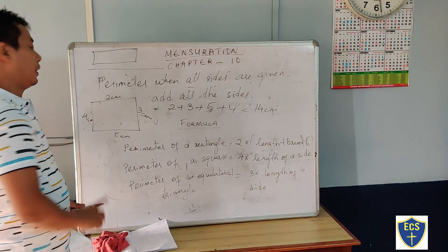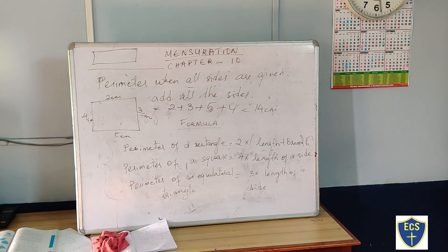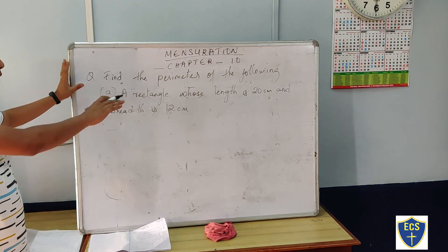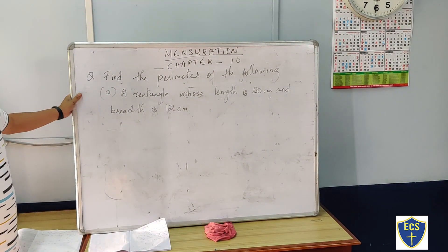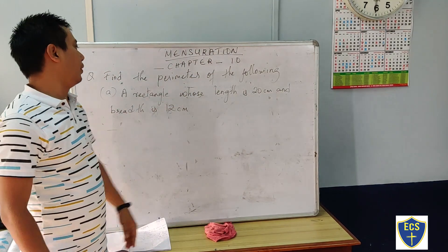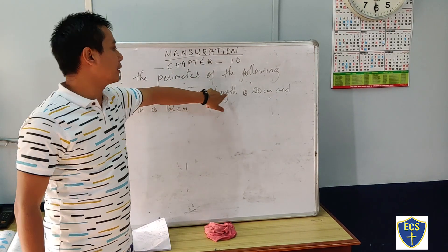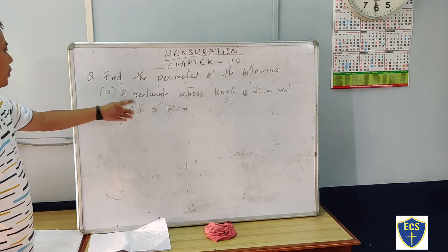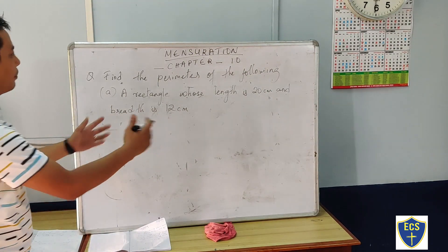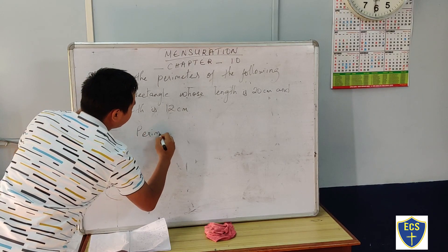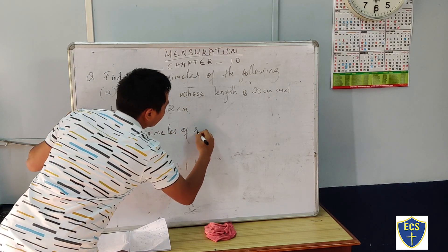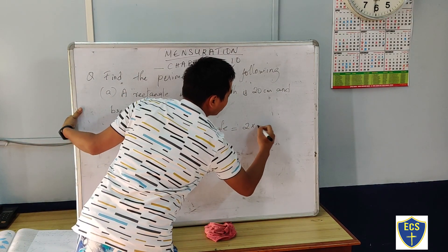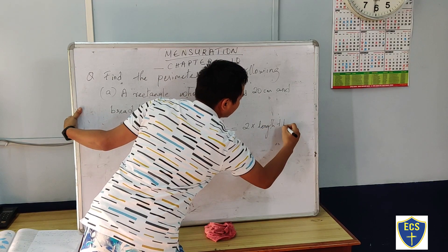Alright, now we are going to do some exercises about the formula. First one: find the perimeter of the following. Number A — a rectangle whose length is 20 cm and breadth is 12 cm. So in this question we have to find the perimeter. Perimeter of a rectangle formula is 2 into length plus breadth.